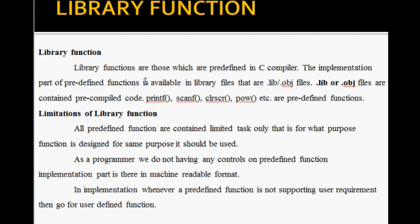Library functions are those which are predefined in the C compiler. The implementation part of predefined functions is available in library files — that are .lib or .obj files — which are already stored. These .lib files contain predefined functions like printf, scanf, clrscr, power, and more. All predefined functions perform combined limited tasks. C program developers use these library functions as basic building blocks.